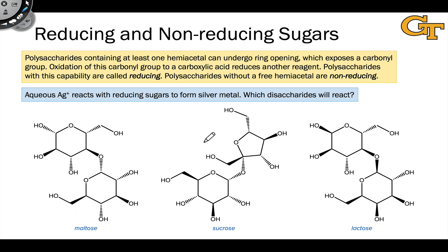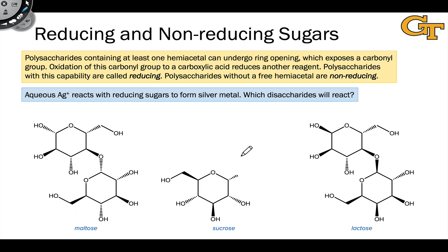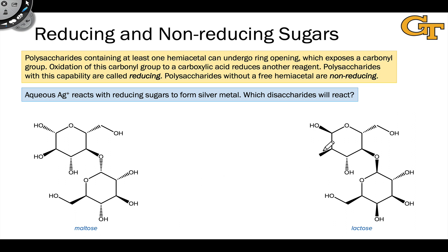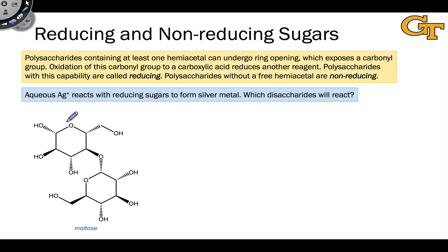First, we're going to look at reducing versus non-reducing sugars. The concept here has to do with the ability of a sugar to reduce silver plus to silver metal, or not. To begin exploring this, I want us to start with maltose, the structure on the left.